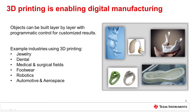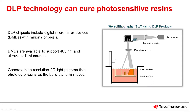There are multiple 3D printing methods. DLP products provide light control capabilities for light-based methods such as stereolithography, or SLA, and selective laser sintering, or SLS. In stereolithography, photosensitive resins are hardened layer by layer using light patterns, often using 405 nanometer or ultraviolet LEDs or lasers.